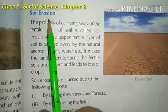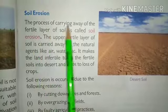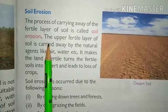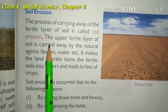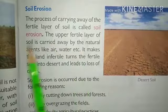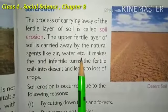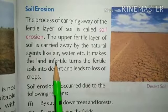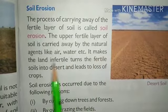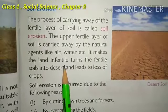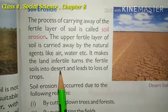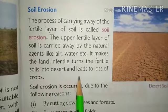Now we come to soil erosion. The process of carrying away of the fertile layer of the soil is called soil erosion. The upper fertile layer of the soil is carried away by natural agents like air and water. When water runs over the top of the soil, the topsoil is washed away, making the land infertile and eventually converting fertile soil into a desert where nothing can grow, leading to the loss of crops.